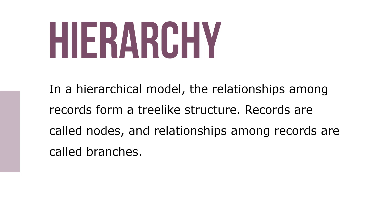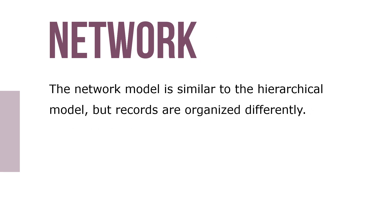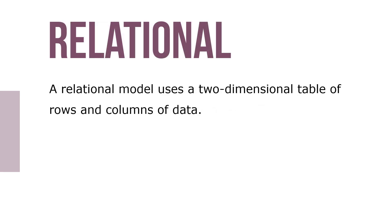In a hierarchical model, the relationships among records form a tree-like structure. Records are called nodes, and relationships among records are called branches. The network model is similar to the hierarchical model, but the records are organized differently. A relational model uses a two-dimensional table of rows and columns of data, much like an Excel spreadsheet in application form.